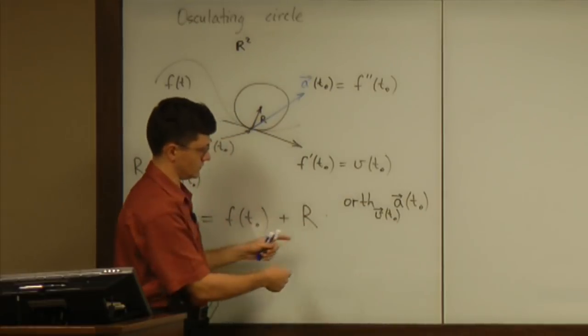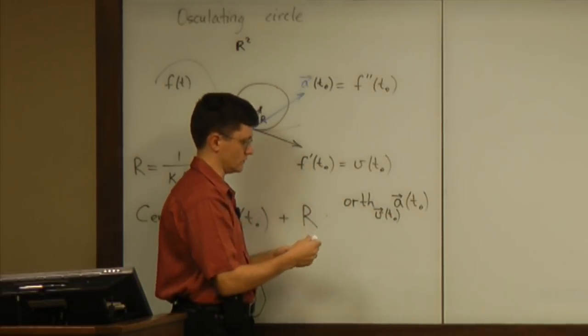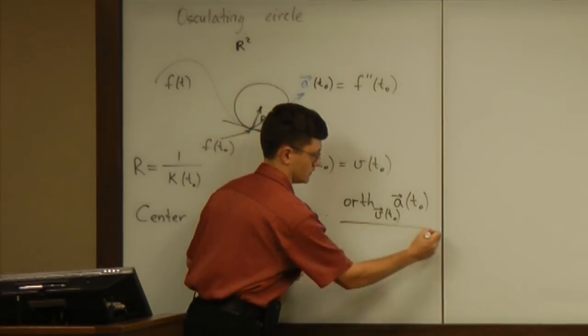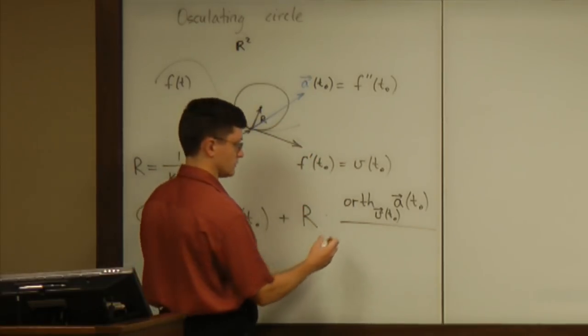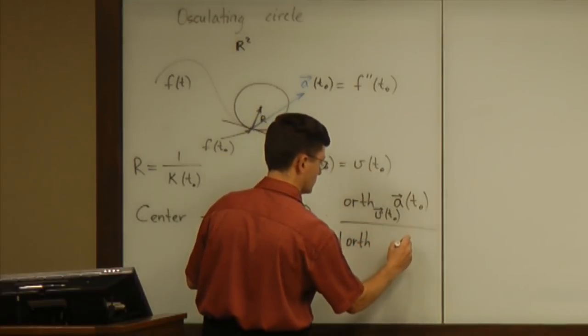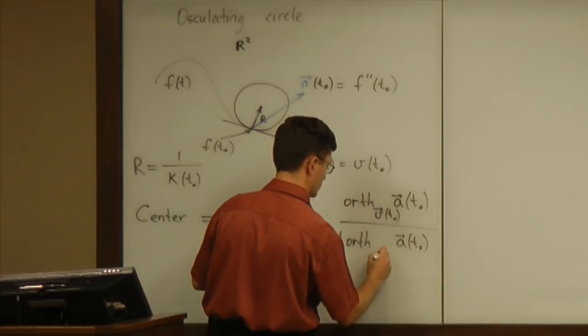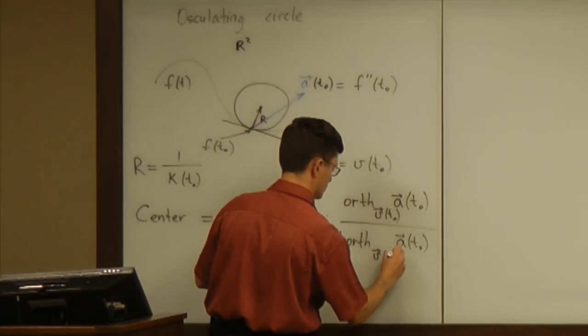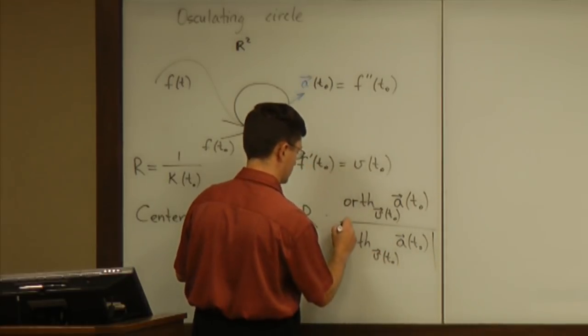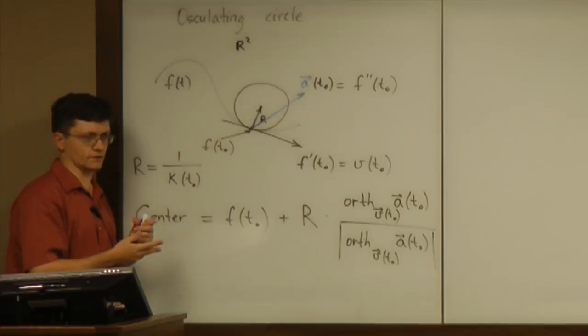But, of course, in this formula we want only direction here without magnitude. So you have to make this unit vector. So you divide it by its magnitude. That's it. That's how you find the center.